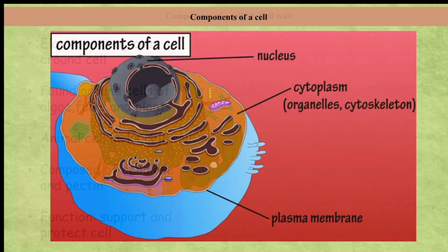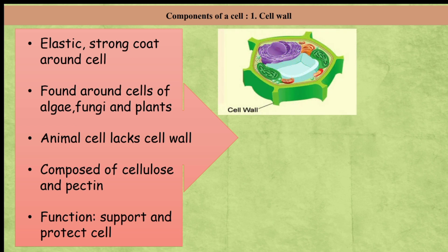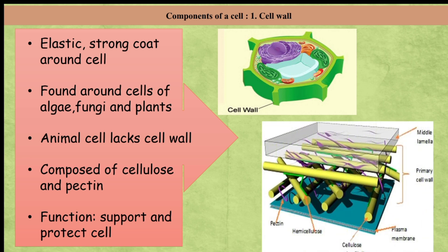The first component is cell wall. Cell wall is an elastic and strong coat found around the cell membrane. It is found around the cells of algae, fungi, and plants. Animal cells lack the cell wall. It is mainly composed of carbohydrates like cellulose and pectins. The functions of the cell wall are to support and protect the cell by preventing the entry of excess water into the cell.